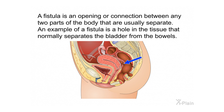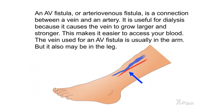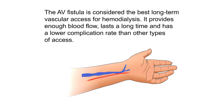A fistula is an opening or connection between two parts of the body that are usually separate — for example, a hole in the tissue separating the bladder from the bowels. An AV fistula, or arteriovenous fistula, is a connection between a vein and an artery. It is useful for dialysis because it causes the vein to grow larger and stronger, making it easier to access your blood. The vein used is usually in the arm but may also be in the leg. The AV fistula is considered the best long-term vascular access for hemodialysis — it provides enough blood flow, lasts a long time, and has a lower complication rate than other types of access.